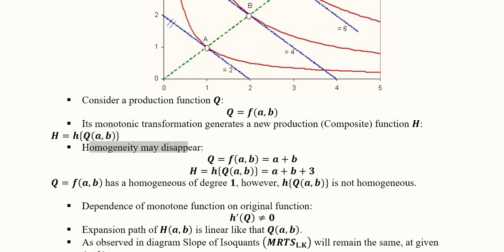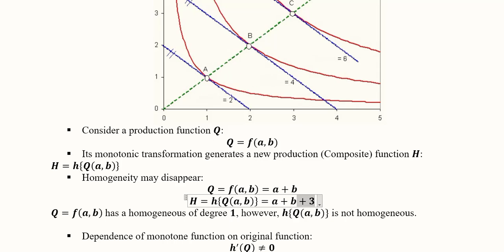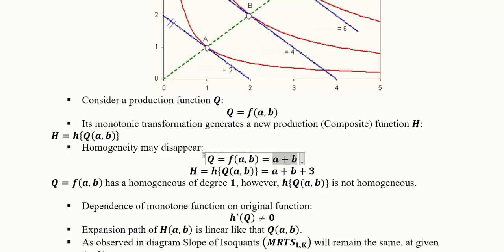Now, homogeneity may disappear. For example, if the original function Q was A plus B, and we do the monotonic transformation, it will become H of Q(A,B), which is A plus B plus 3. The plus 3 represents the monotonic transformation. The original Q is homogeneous because we can introduce lambda into A and B and factor it out. But in the transformed version, if we introduce lambda into A and B, it will not completely factor out because of the constant 3. So a homothetic function may not be homogeneous — every homothetic function is not necessarily homogeneous.